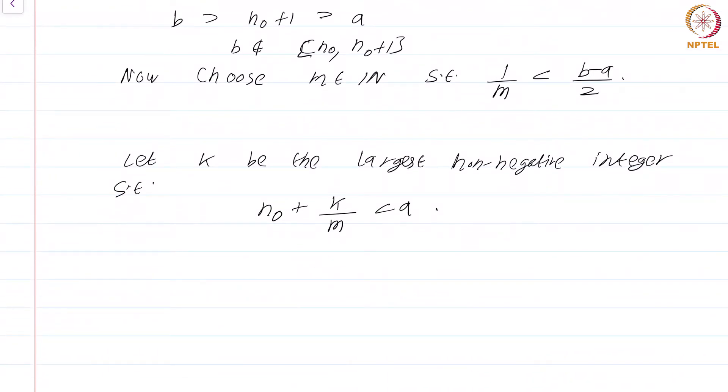such that n_0 + k/m is less than a. So a lot of confusing things have happened. Let us draw a picture to make sense of what is going on. We have the points a and b. We know that n_0 is here and under our hypothesis n_0+1 exceeds b.